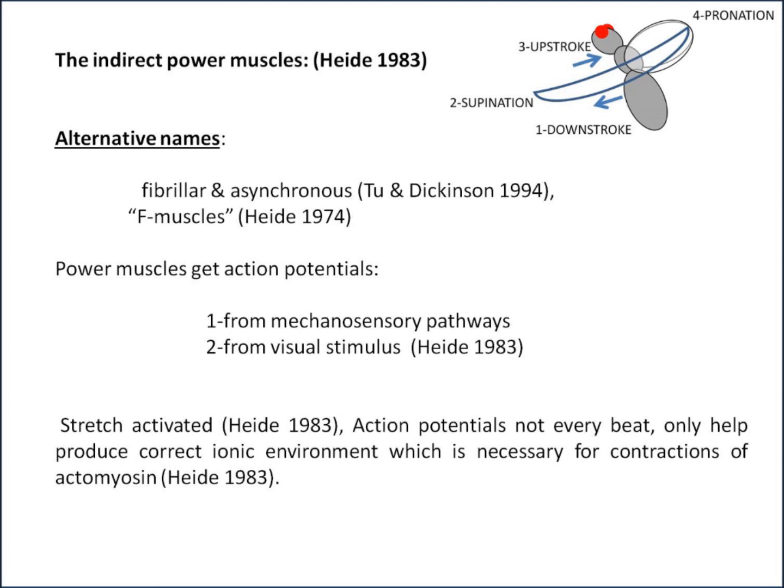These action potentials are not on every single beat, but they are usually at a specific phase of the wingbeat when they do arrive. There is actually some emerging evidence that there is an absolute spike frequency of the power muscles into neurons. The action potentials are not what triggers the contractions of these muscles — you've got two sets that make up this system.